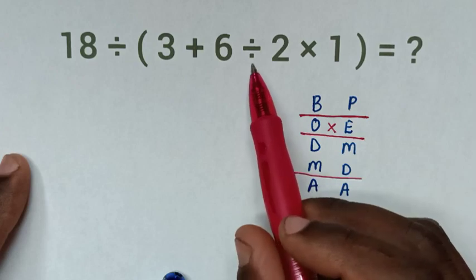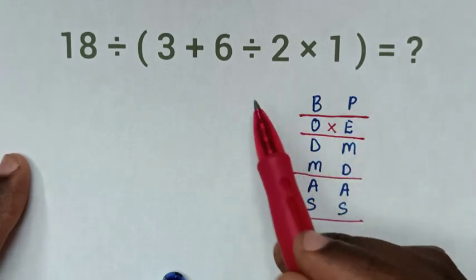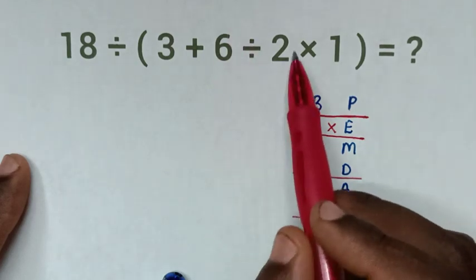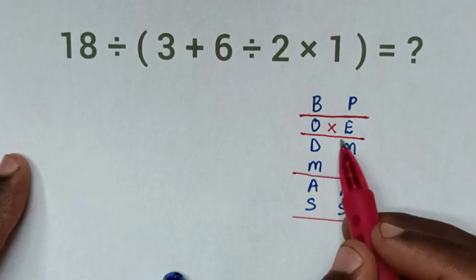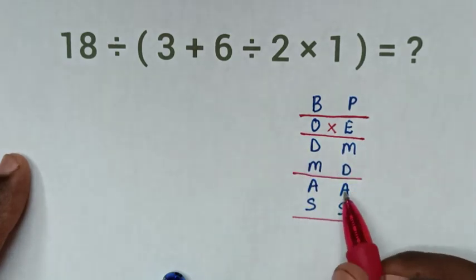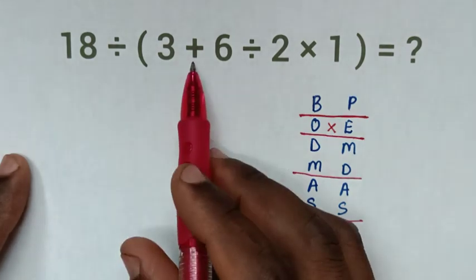If it starts with division, then multiplication, we'll work from left to right. So, we'll start to deal with this division first and then multiplication. After we finish this step, we'll then deal with addition, which we have in this problem.